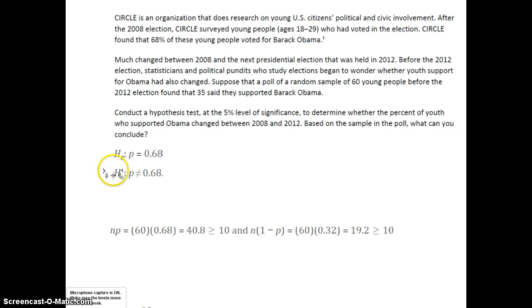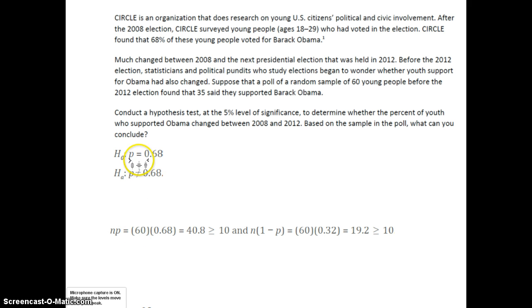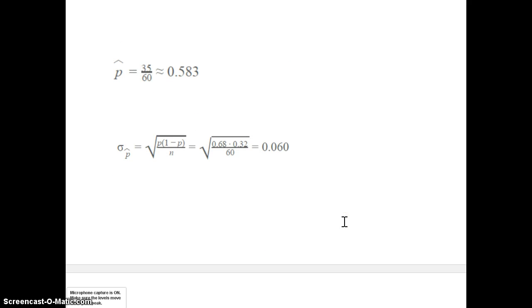The alternative hypothesis is that the population proportion is not equal to 0.68 — this is a two-tail test. The null hypothesis is p equals 0.68. Check for normality: n is 60, p is 0.68 from the null hypothesis (we assume the null is true), so n times p and n times (1 minus p) are both greater than or equal to 10 — normality is satisfied. p-hat is 35 out of 60, which is 58.3%. The standard error, using p from the null hypothesis, is 0.06.